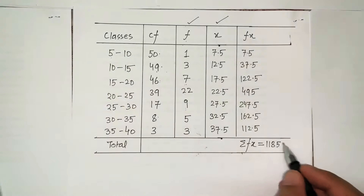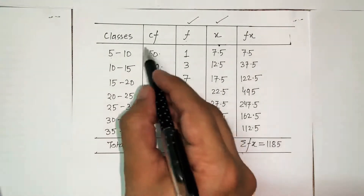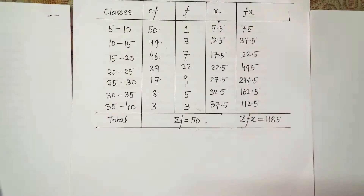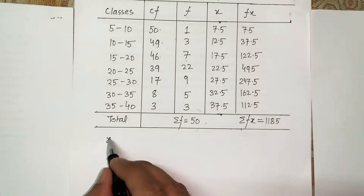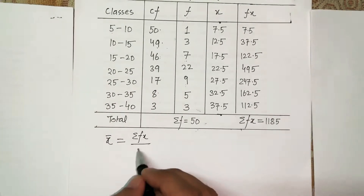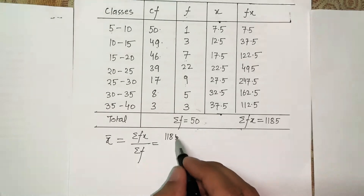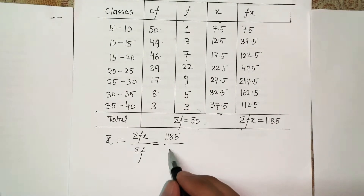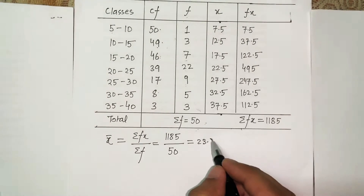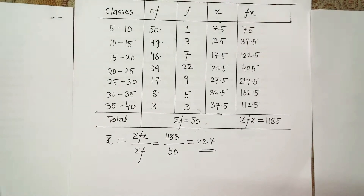The summation of fx = 1185. The summation of f = 50. Using the arithmetic mean formula: x̄ = Σfx / Σf = 1185 / 50 = 23.7.